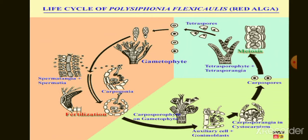The whole structure is known as carposporophyte or cystocarp. Individuals of the higher and complex group also produce tetrasporophyte and tetraspores. In this way one cycle is completed. The life cycle may be haplontic, haplobiontic, or diplobiontic.